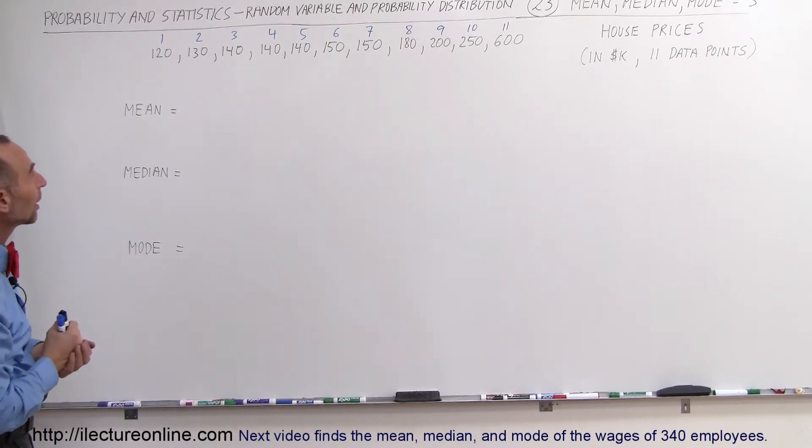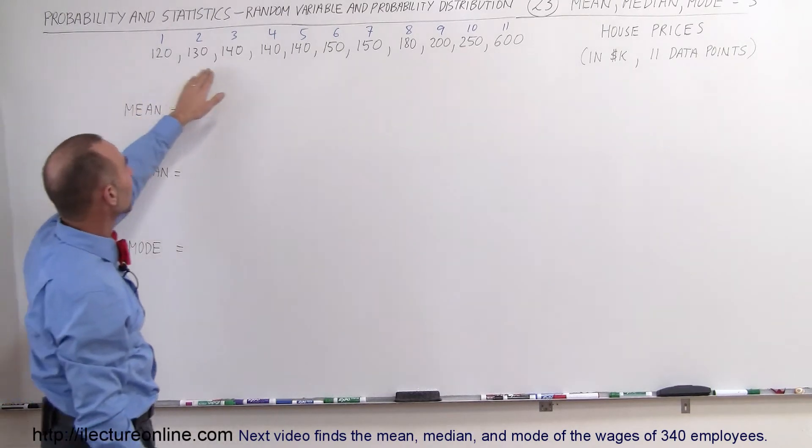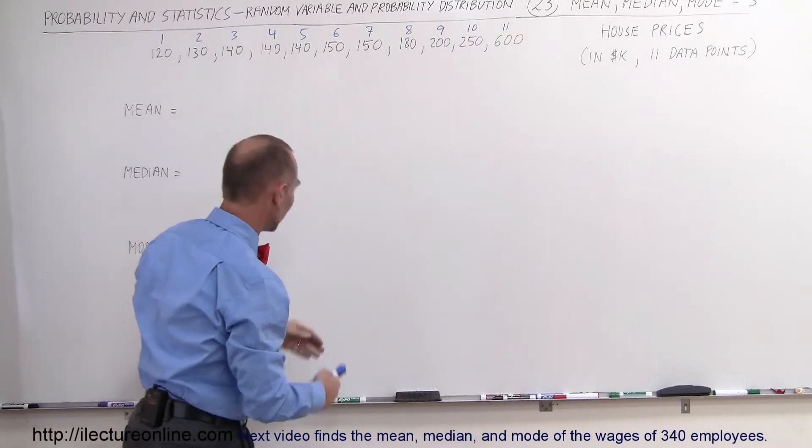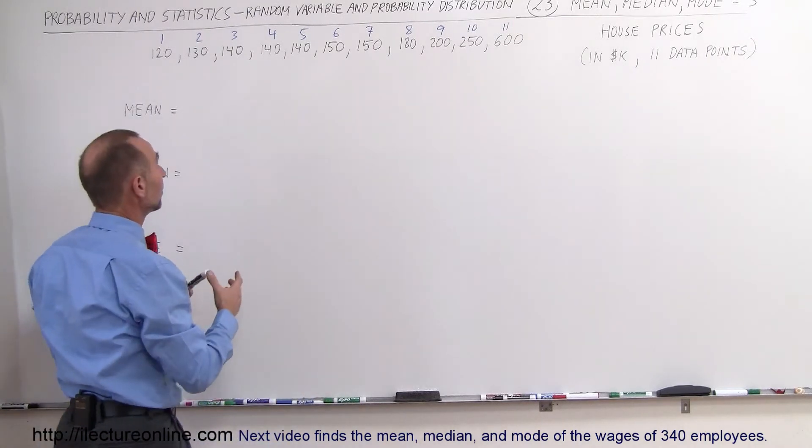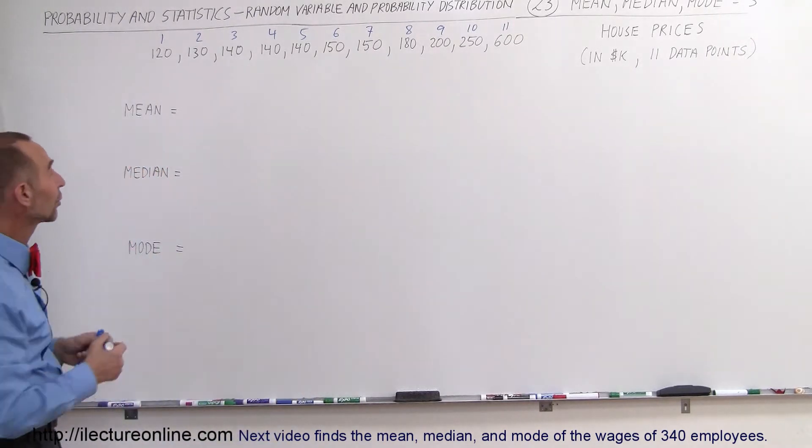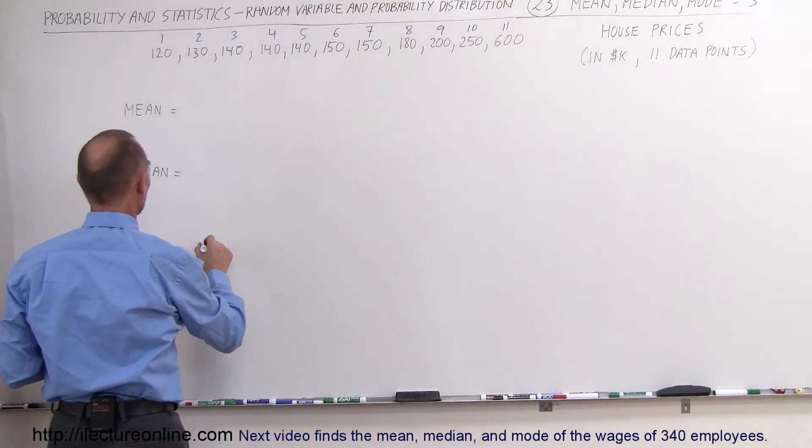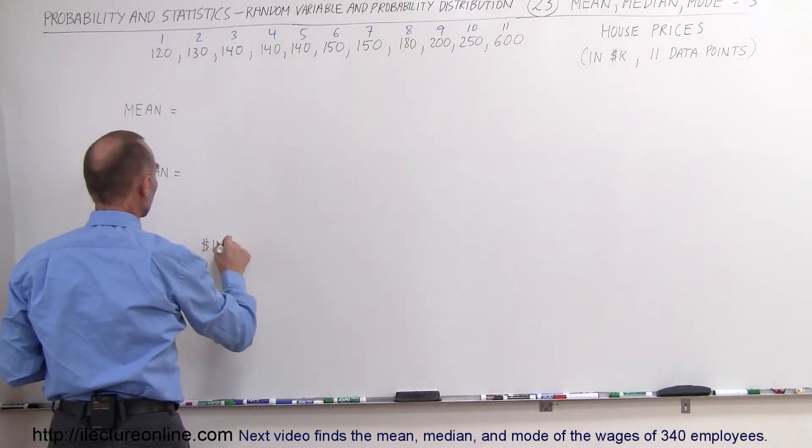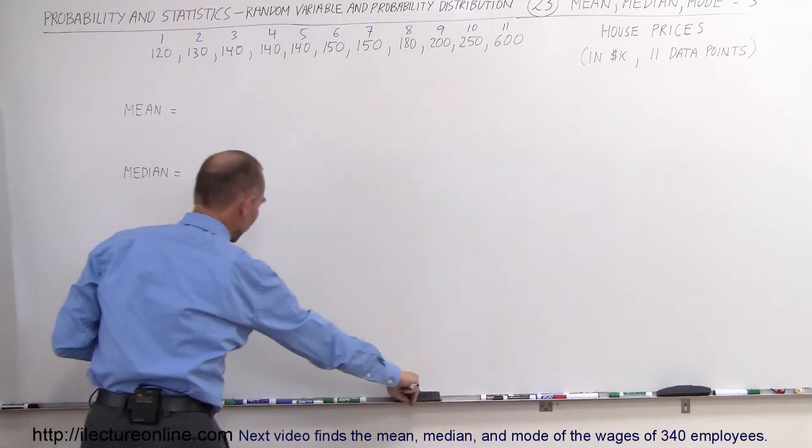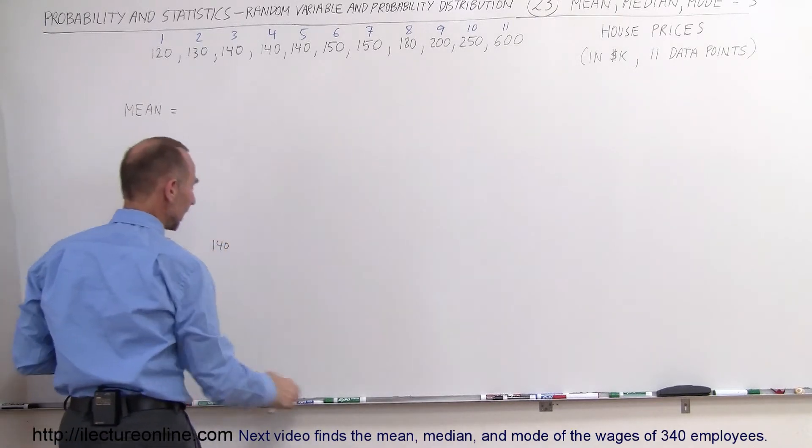You're looking for the number that occurs the most. Notice there were three of them sold at $140,000, which is the most common. In a way it's the most common, the one that occurs the most, and so the mode would be $140,000.